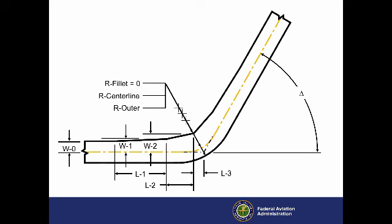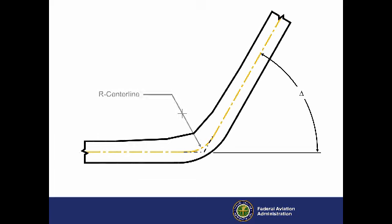The taxiway turn less than 90-degree delta figure from the airport design AC shows the dimensions we use to define each turn. Landing gear paths are dependent upon the delta of the turn and the centerline radius, which is the first dimension we determined when establishing FAA taxiway turn geometry guidance. For turns of 90 degrees or more, we based the centerline radius on a maximum nose gear steering angle of 50 degrees. We chose this angle to reduce tire scrubbing after consulting with aircraft manufacturers. For turns of less than 90 degrees, we chose the centerline radius to allow the pilot to maintain taxiing speed.